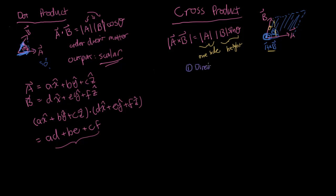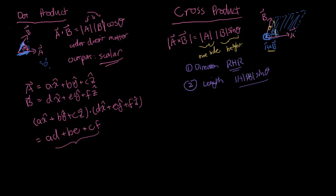To summarize, you need to find two things: first, the direction — determined by the right-hand rule, by pointing your index finger and other fingers along the first vector, curling toward the second vector, and noting which way your thumb points. Second, the magnitude, which is the area of the parallelogram: length of A times length of B times sine theta. Now, notice the cross product is sensitive to order. If you do A cross B, the length is AB sine theta. If you do B cross A, it's the same parallelogram and the same length, but if you point your fingers the other way and curl toward A, your thumb now points into the board.